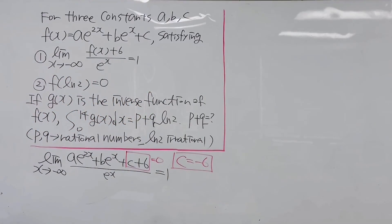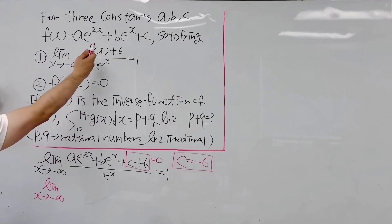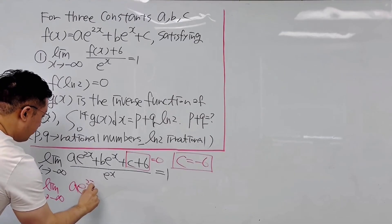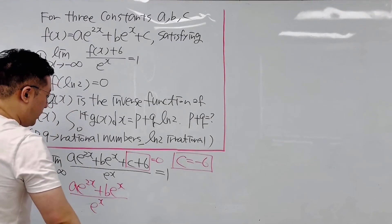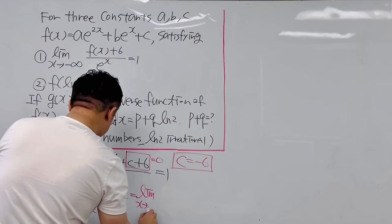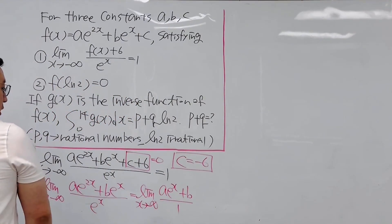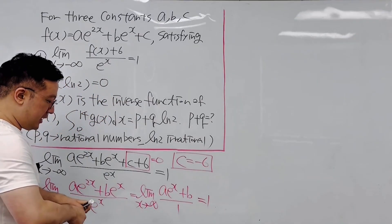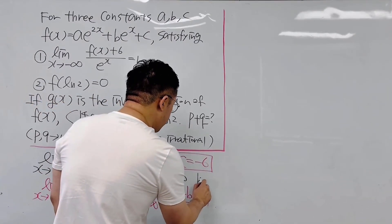Since c equals negative 6, f of x is now everything minus 6. The first condition becomes the limit as x goes to negative infinity of a times e to the power of 2x plus b times e to the power of x, over e to the power of x. Dividing all terms by e to the power of x gives the limit of a times e to the power of x plus b, which equals 1. Since e to the power of x goes to 0 as x goes to negative infinity, your b is equal to positive 1.